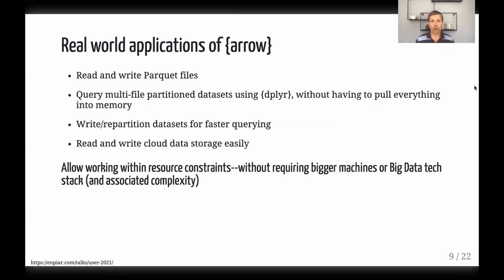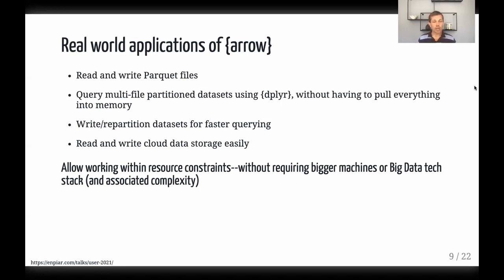I asked on Twitter for examples where Arrow had solved a real data problem, to get a sense of what sorts of issues people were using Arrow to solve in the world. A few common themes emerged: the ability to write Parquet files, taking advantage of Arrow's features for reading multi-file datasets, and using dplyr to query them — selecting a subset of data to pull into memory without having to read everything in first.